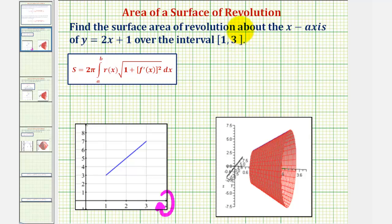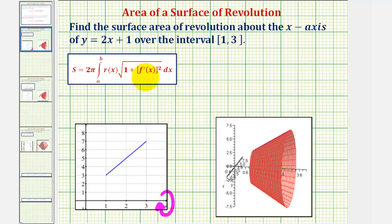So because we have a function of x, the surface area s is equal to two pi times the integral of r of x times the square root of the quantity one plus f prime of x squared, integrated with respect to x from a to b. Where r of x is the distance between the graph of f of x and the axis of rotation, and notice how the square root in the integrand is the same square root we use to find arc length when we have a function of x.